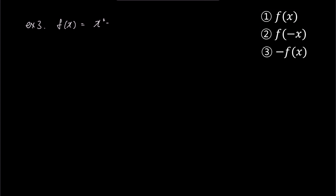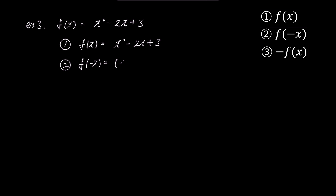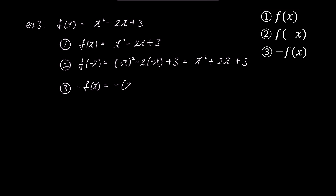In the third example, f(x) is x squared minus 2x plus 3. For representation 1, f(x) is x squared minus 2x plus 3. For representation 2, f of negative x is negative x squared minus 2 times minus x plus 3, which simplifies to x squared plus 2x plus 3. For representation 3, minus f(x) is minus x squared minus 2x plus 3, which simplifies to minus x squared plus 2x minus 3.